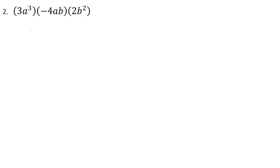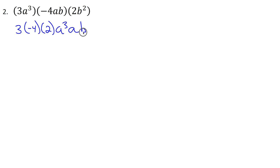Now let's take a look at this product of three monomials: 3a³ times -4ab times 2b². Same sort of thing — organize everything with coefficients first, then one letter, then the next. So we have 3 times -4 times 2, then a³ times a, then b times b². The coefficients give -12 times 2 = -24. a³ times a increases the exponent by 1 to a⁴, and b times b² increases that exponent by 1 to b³.